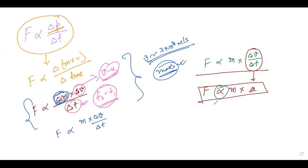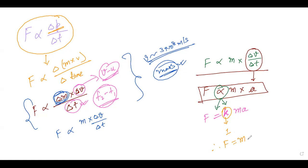With the directly proportional sign, we cannot solve the equation — we need to replace it with a proportionality constant K. So it becomes F equals KMA, where the numeric value of K for linear motion is taken as 1. Therefore the ultimate formula becomes F equals MA — force equals mass times acceleration.